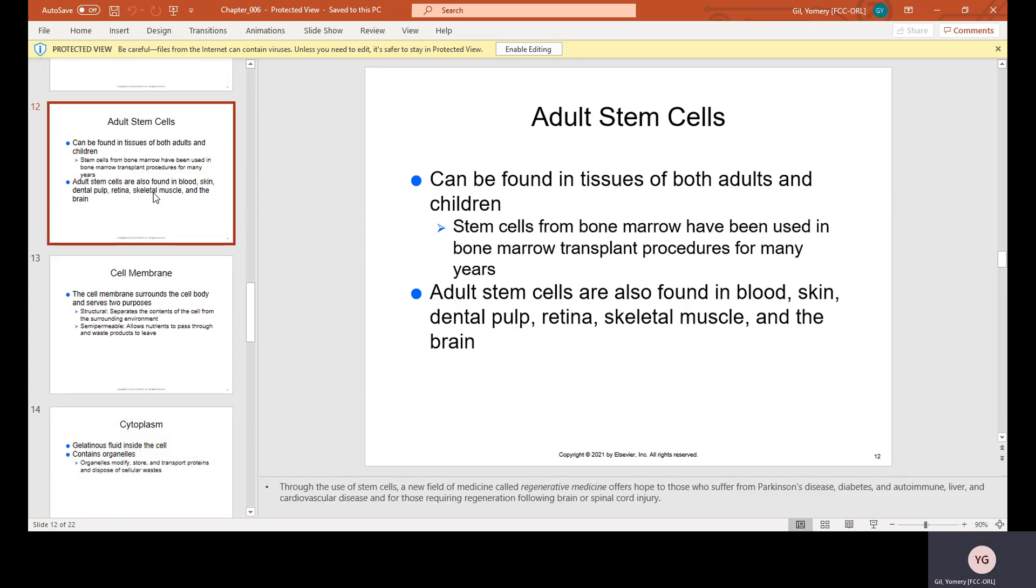Adult stem cells can be found in tissues of both adults and children. Stem cells from bone marrow have been used in bone marrow transplant procedures for many years. Adult stem cells are also found in blood, skin, dental pulp, retina, skeletal muscle, and the brain.